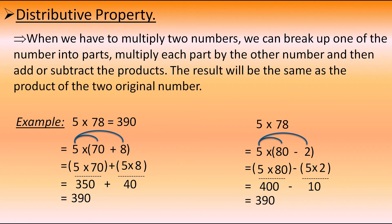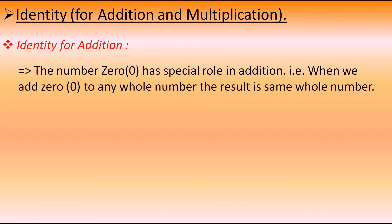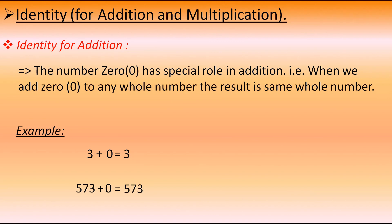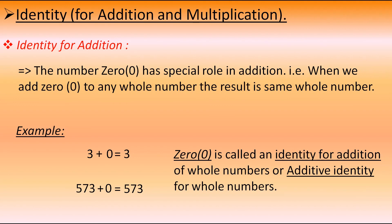Now let's move to the next property: identity for addition and multiplication. Identity for addition is the number 0. The number 0 has a special role in addition — when we add 0 to any whole number, the result is the same whole number. For example, 3 plus 0 equals 3, and 573 plus 0 equals 573. So 0 is called the identity for addition of whole numbers, or the additive identity for whole numbers.